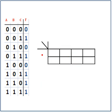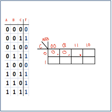Let's try the same truth table but with different variable ordering — put A and B here, and C here. Again we use 00, 01, 11, 10 ordering on one axis and 0, 1 on the other. We go in and fill in each cell: A=0, B=0, C=0 is zero; A=0, B=1, C=0 is zero; A=1, B=1, C=0 is one; A=1, B=0, C=0 is zero; A=0, B=0, C=1 is one; A=0, B=1, C=1 is one; A=1, B=1, C=1 is one; A=1, B=0, C=1 is one. So we have all ones in the bottom row.